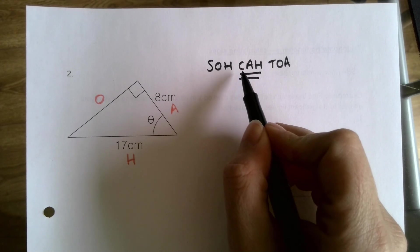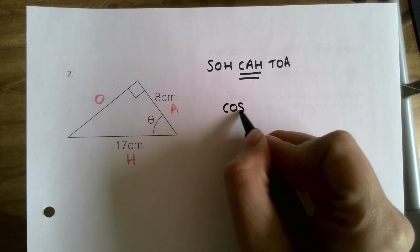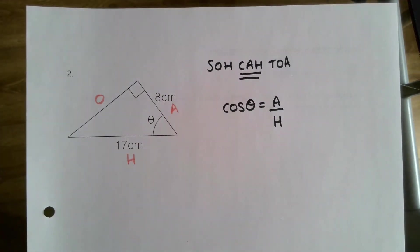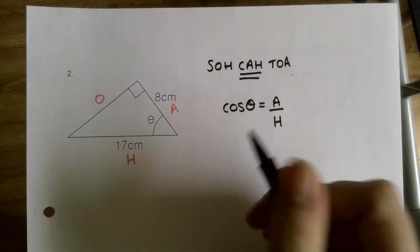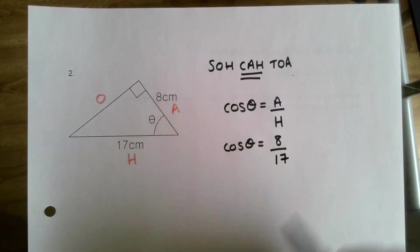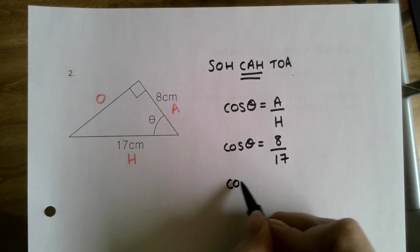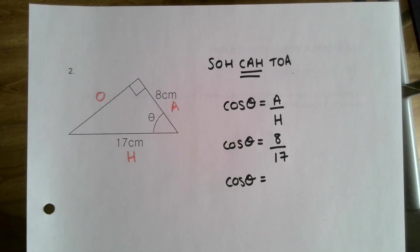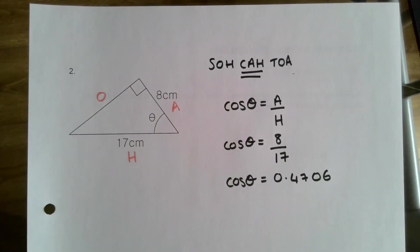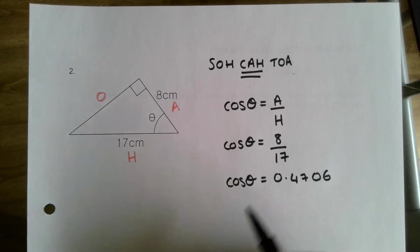Let's remind ourselves of SOH-CAH-TOA. The sides we have are A = 8 and H = 17. We need to think: which one links A and H? It's cos. So we write out the rule for cos: cos θ = A/H. Fill in the numbers we know: cos θ = 8/17.